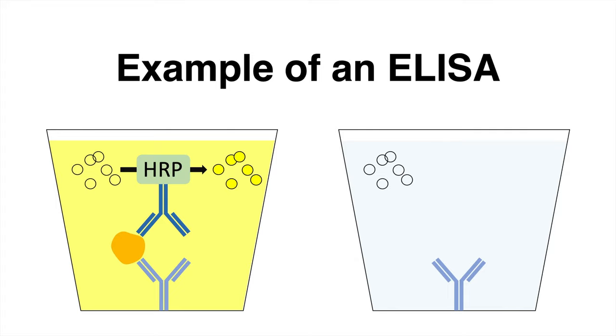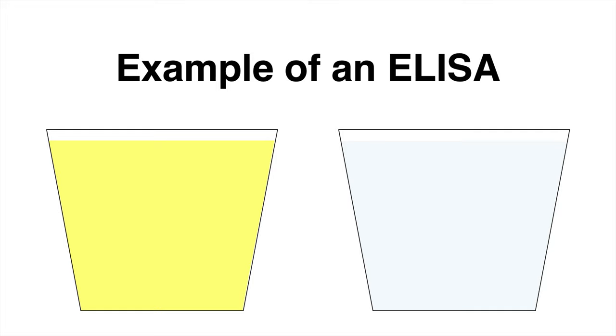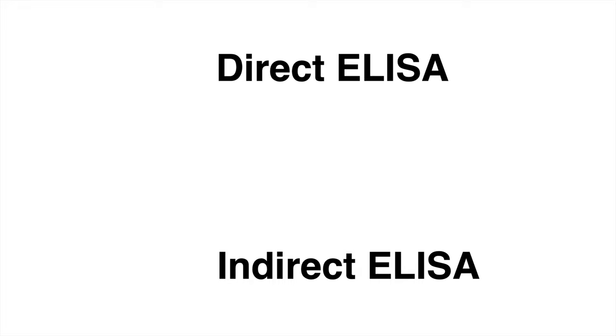This can be investigated and also quantified using spectrophotometry. The control remains colorless, since substrate is not converted here. If you want to have a closer look into the direct or indirect ELISA, you may click one of these videos here.